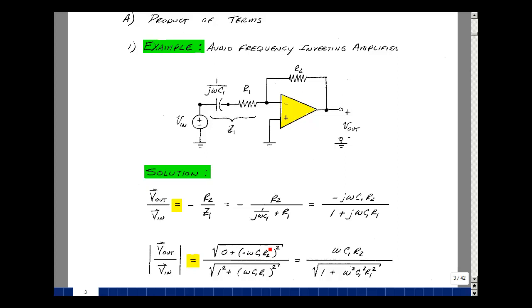Not the j, but the things that multiply j squared and then square root. In the denominator, 1 squared and then omega C1 R1 squared. The squaring and the square root gets rid of the minus sign. So it's omega C1 R2 over the square root of 1 plus omega squared C1 squared R1 squared.